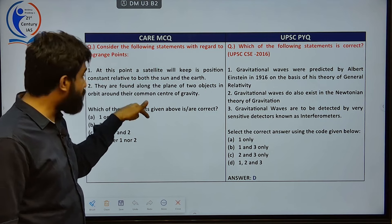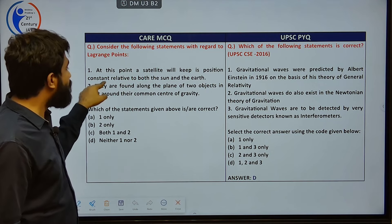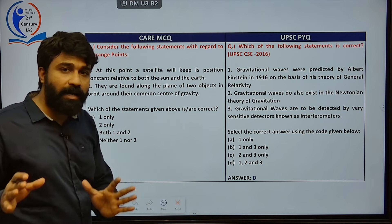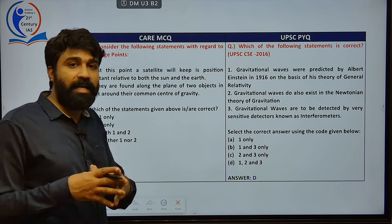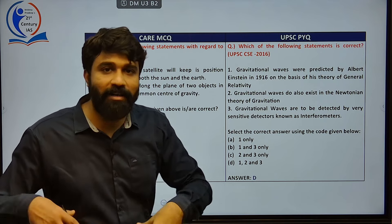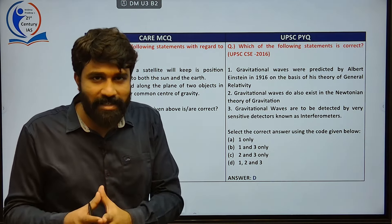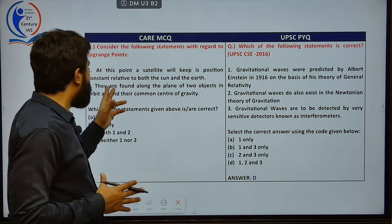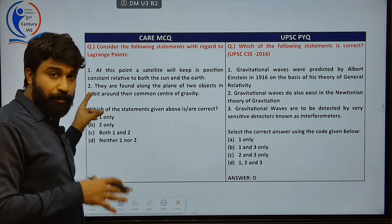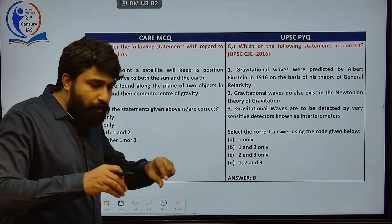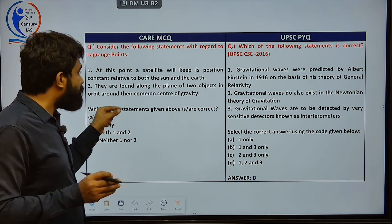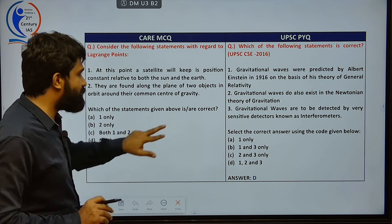At a Lagrange point, a satellite keeps its position constant relative to both the Sun and the Earth — meaning the satellite is stable and is not revolving. They are found along the orbital plane of two objects, around their common center of gravity.